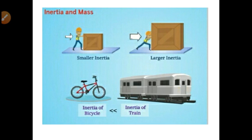If you compare a bicycle and a train, you know the train is having more mass. Therefore, for the train, inertia will be more.